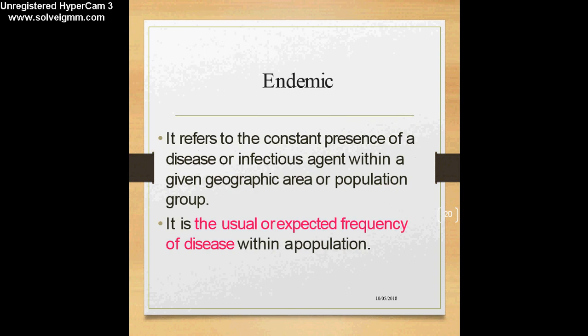Now we will learn three terms: endemic, epidemic, and pandemic. Endemic refers to the constant presence of a disease or infectious agent within a given geographic area or population group. If I say that dengue is endemic in Malaysia, I am correct — this disease is always present in any given part of the country or in given populations. We know that there will always be a certain number of cases, and that is why we call it the usual or expected frequency of disease.